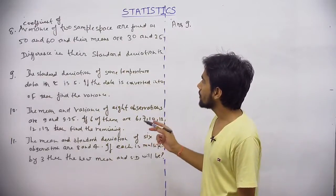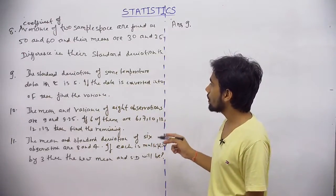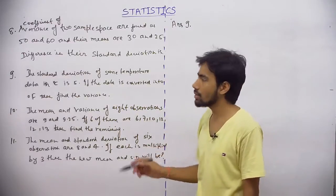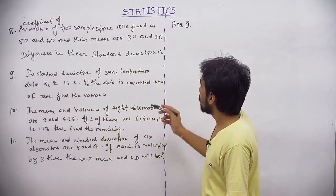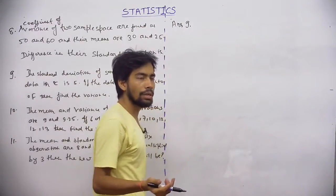Now see question number 9. The standard deviation of some temperature data in degree Celsius is 5. If the data is converted into Fahrenheit, then find the variance. So what is the formula for finding any temperature in Fahrenheit from degree Celsius?